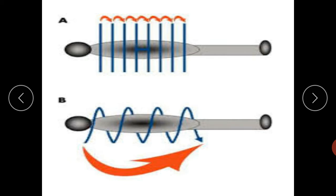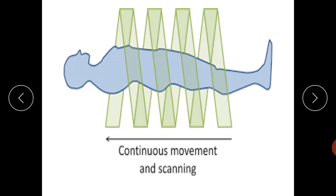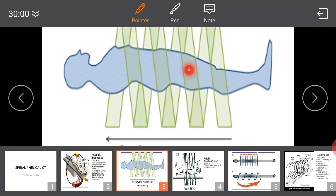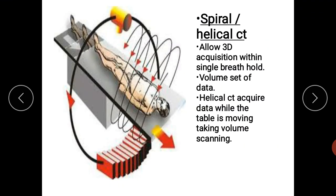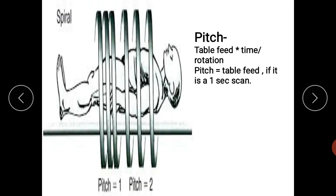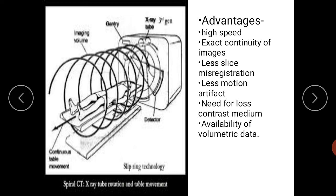But now with the help of slip ring, this is how 6th generation works. Patient is lying, X-ray tube is moving, but here the table will also move along with the X-ray tube. Like this you can understand.